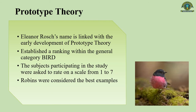In this regard, Eleanor Rosch's name is inextricably linked with the early developments of prototype theory. She established a ranking within the general category bird. Subjects were asked to rate on a scale from 1 to 7 the goodness as an example of different kinds of birds. The results were surprisingly consistent: robins were considered the best examples, followed by ducks and sparrows, while ducks and peacocks were considered less good examples, whereas penguins and ostriches were ranked lowest. Similar results were obtained for categories of furniture, fruit, and clothing.